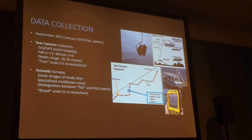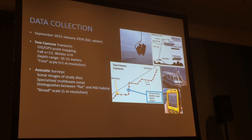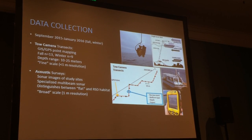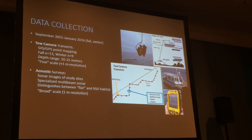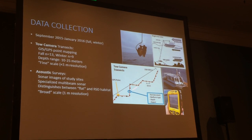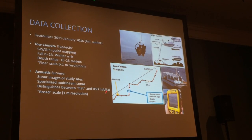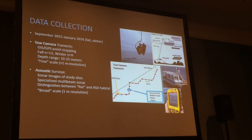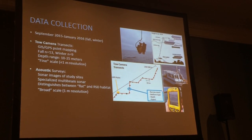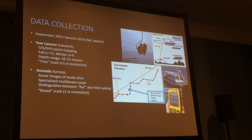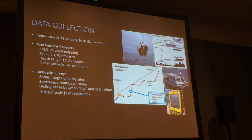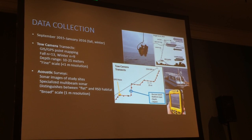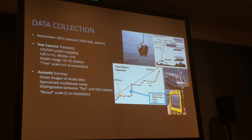Our data collection spanned from September 2015 to January 2016 over two seasons: fall and winter. We used tow camera transects composed of 250 to 500 meter transects, with GIS GPS points along each transect about every 15 meters. From each of those points, we extracted burrow count, bed form type, depth, and aspect. We paired this with acoustic surveys done in partnership with the Seafloor Mapping Lab at California State University Monterey Bay, using specialized multi-beam sonar to distinguish between flat and RSD habitat at a broader scale.